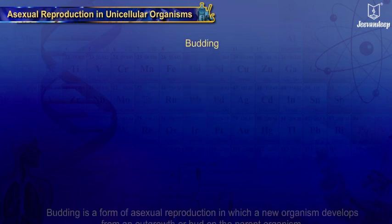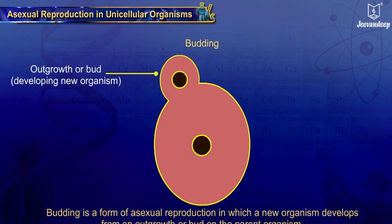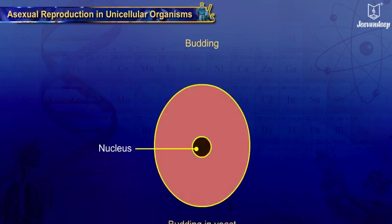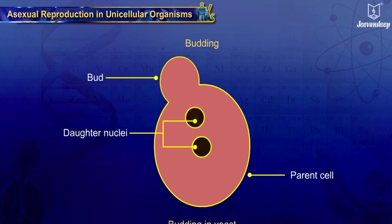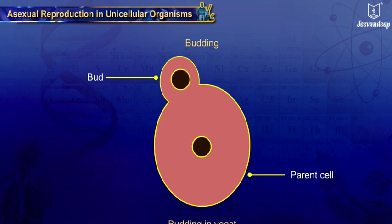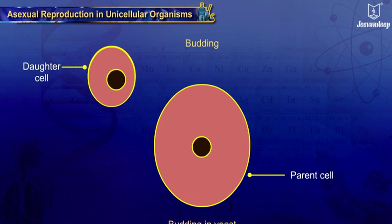Budding is a form of asexual reproduction in which a new organism develops from an outgrowth or bud on the parent organism. In yeast, a small bud develops on the parent cell. The nucleus divides into two and one daughter nucleus migrates into the bud. The bud continues to grow and separates from the parent cell, forming a new cell.